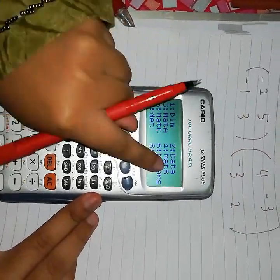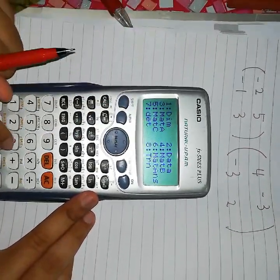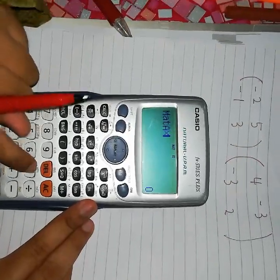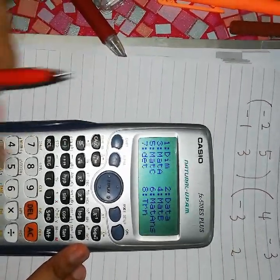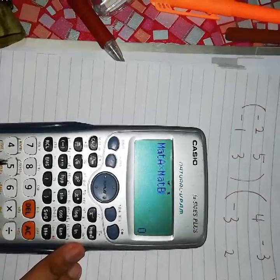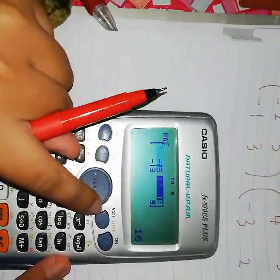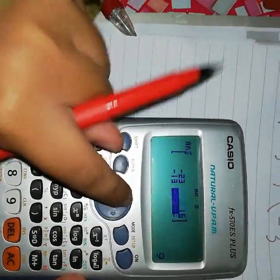Lepas tu, tekan matrix. Lepas tu, korang tengok ni kan. Ada mat A, mat B. So, tekan nombor 3. Mat A, darabkan dengan shift, matrix, mat B. Inilah jawapan dia.